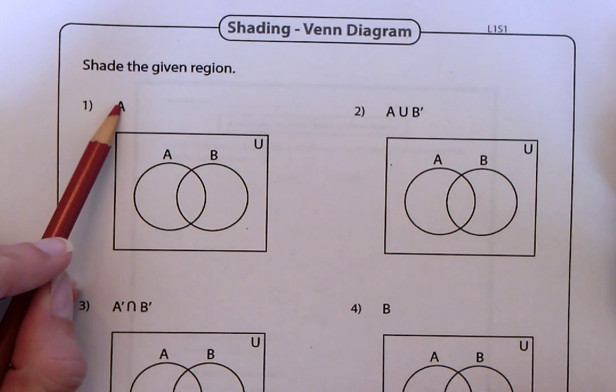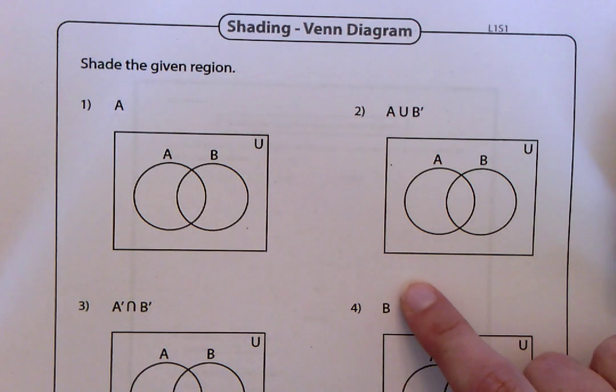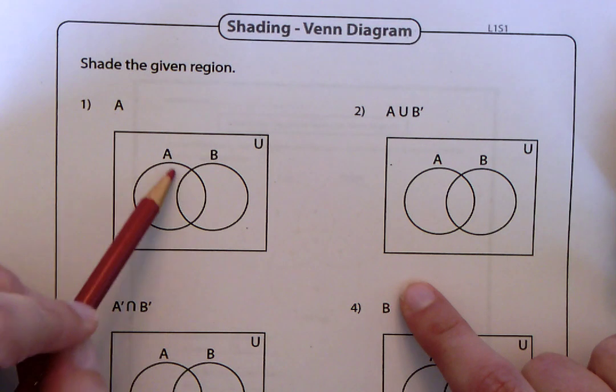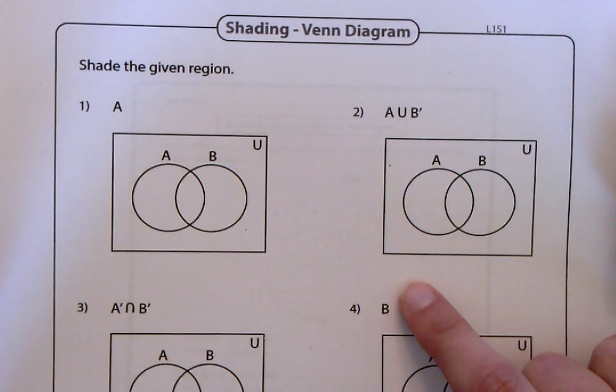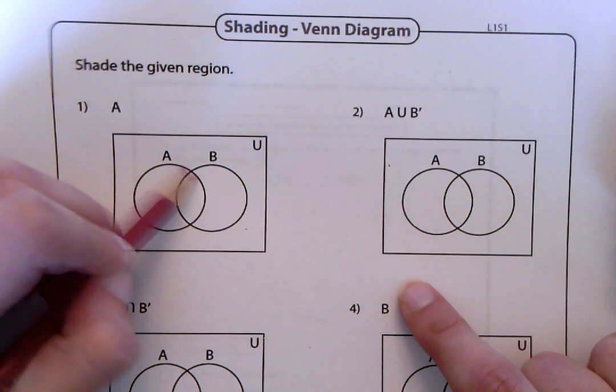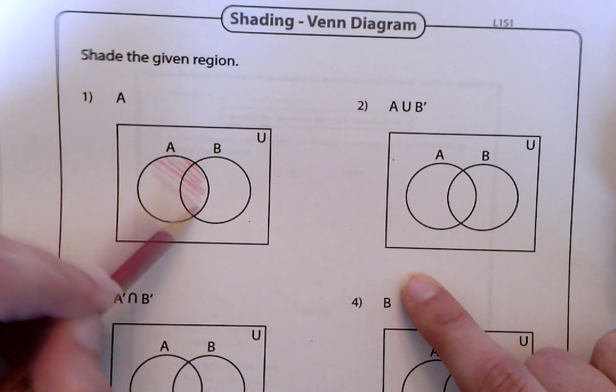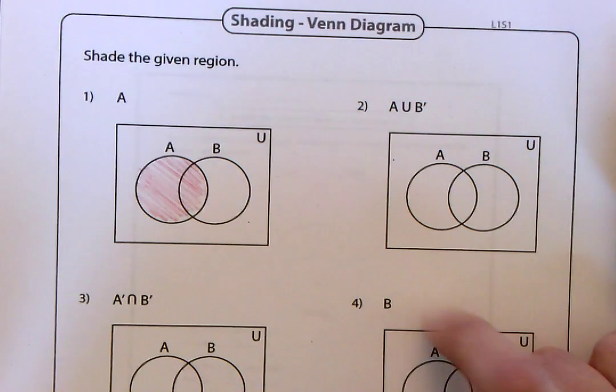Shade everything that's in the set of A. So if we had a set of numbers, or let's say A represented the cakes from the last video, you would just shade everybody who ate cake. So I'm going to just shade this circle, just shade the whole circle.